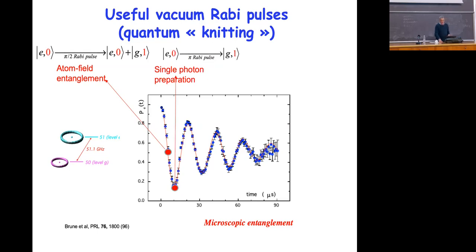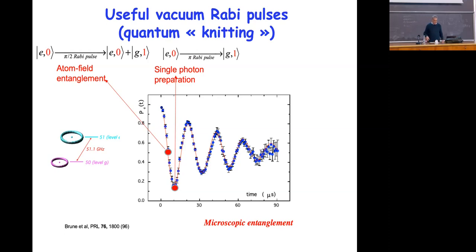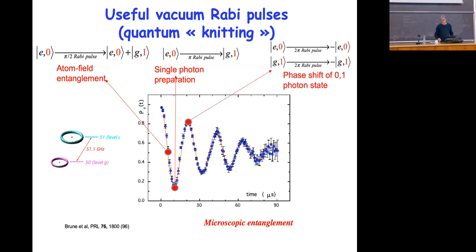What happens if you wait twice as long? That is a pi pulse, and at this point |e,0⟩ has become |g,1⟩ — so the atom leaves exactly one photon in the cavity. This is quite different from a classical state: a classical state has fluctuations in the photon number, whereas here you really prepare a quantum state — a field which is an eigenstate of the photon number, one photon. At the end I will show you that you can use techniques to prepare not only one but two, three, or any desired photon number up to a certain value. What happens if you go to the two-pi pulse? You make one complete turn and go from |e,0⟩ back to |e,0⟩, or from |g,1⟩ back to |g,1⟩.